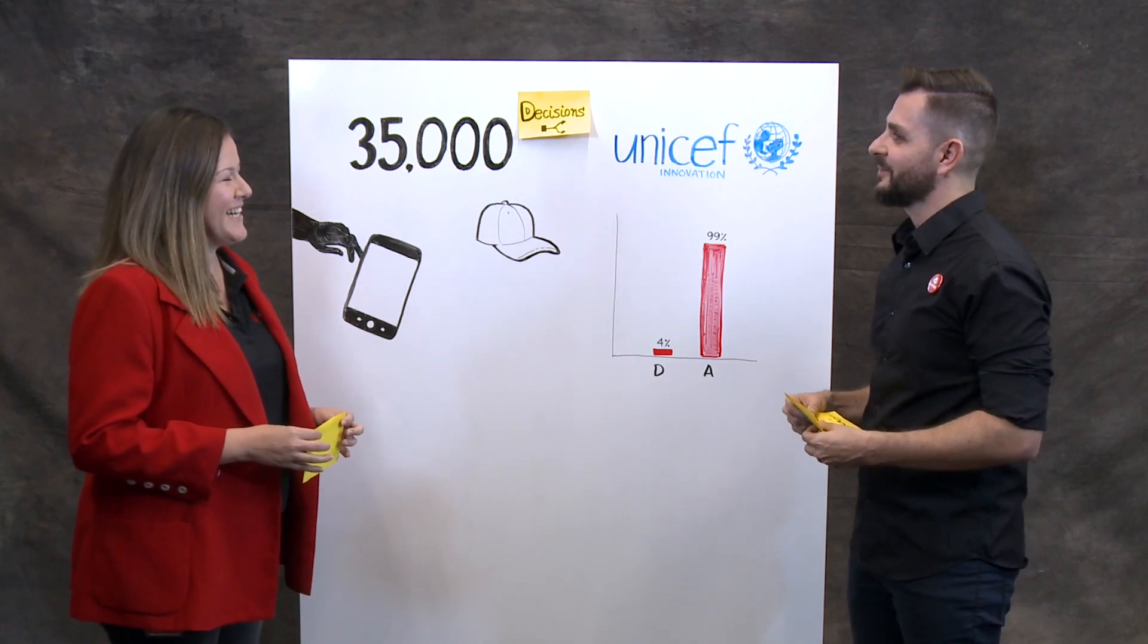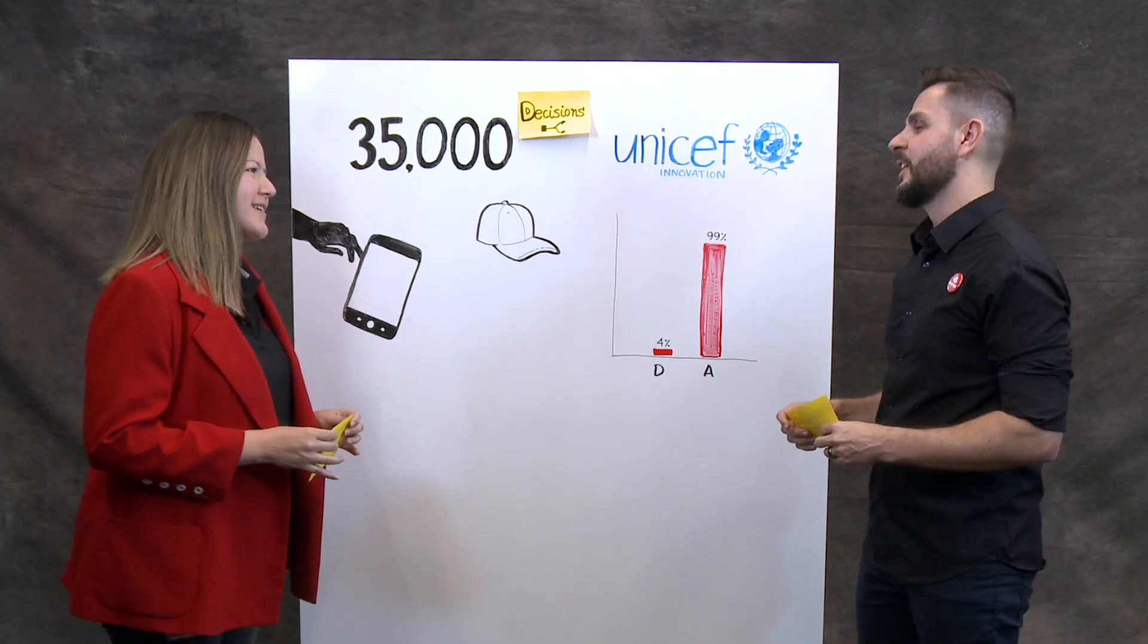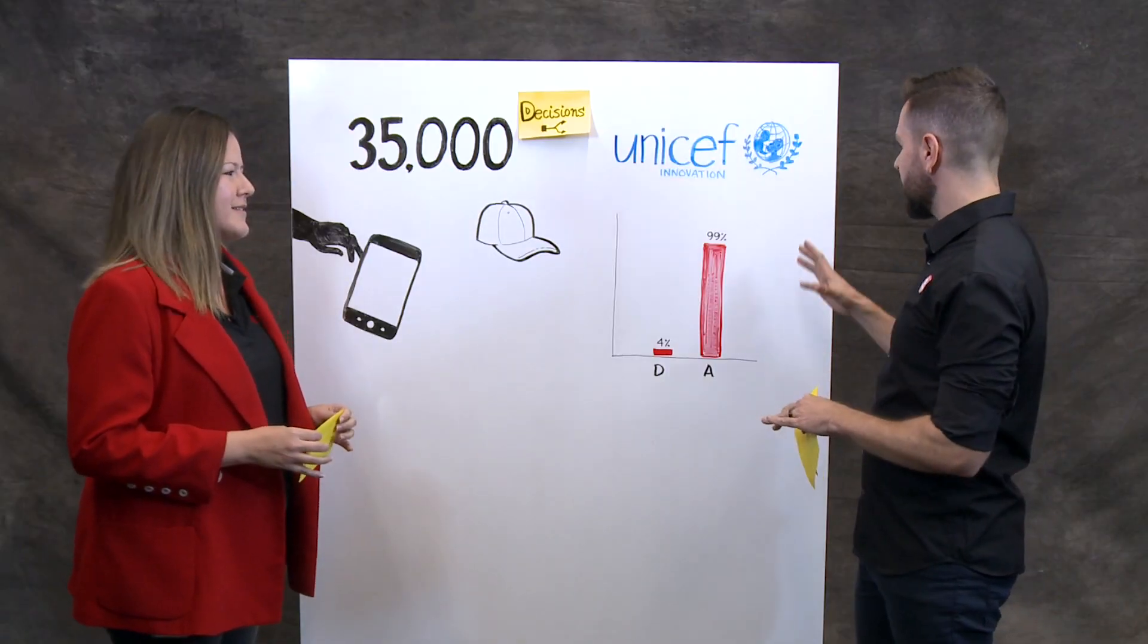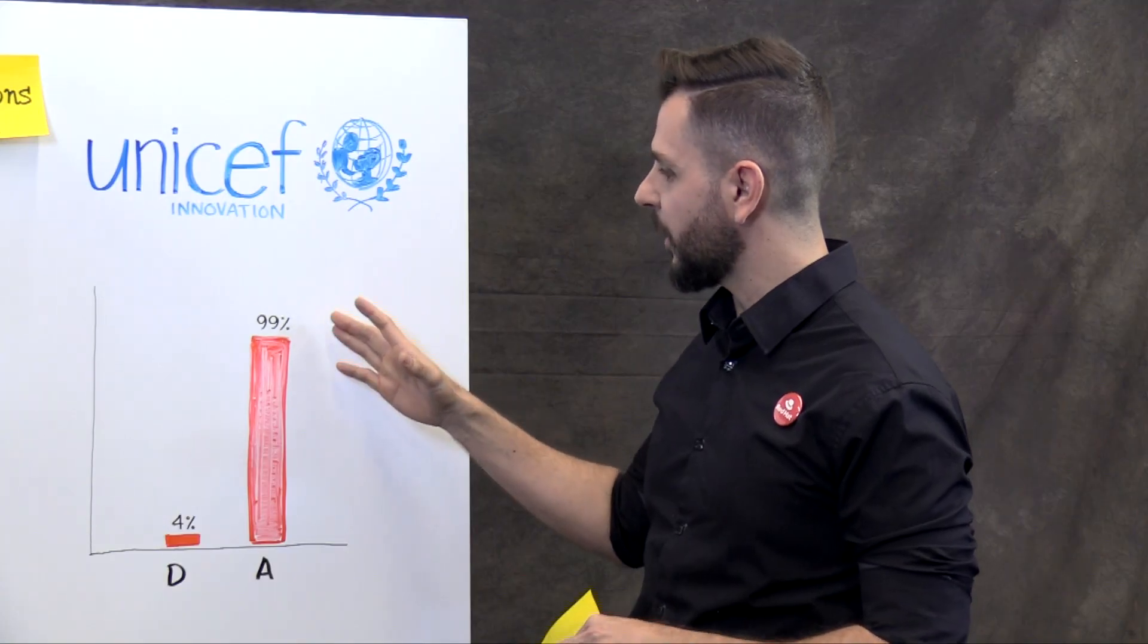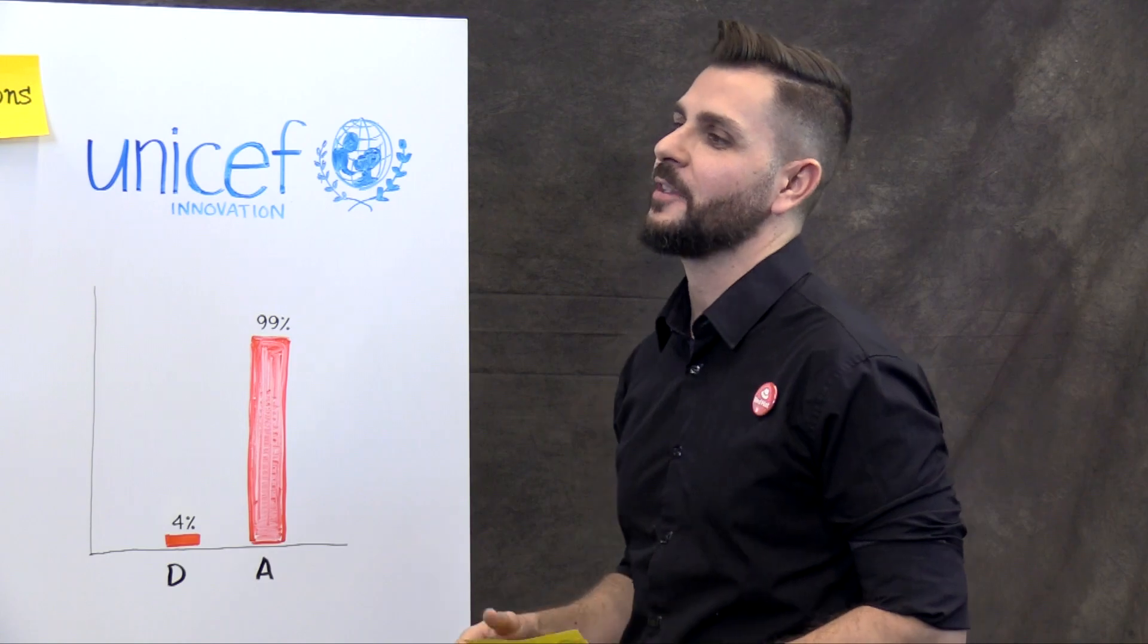That's amazing and very fascinating. So can you give a real life example of what that looks like? Yeah. So for example, there is a number that in Austria it's 99% and in Denmark it's 4%. What do you think that is?